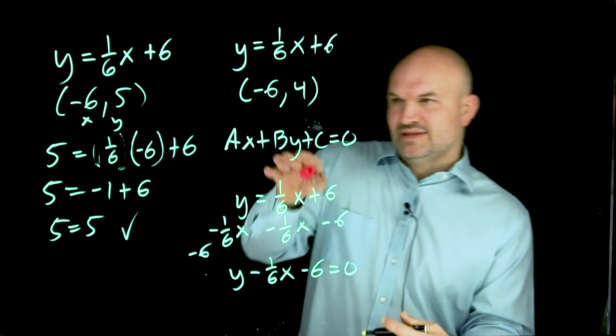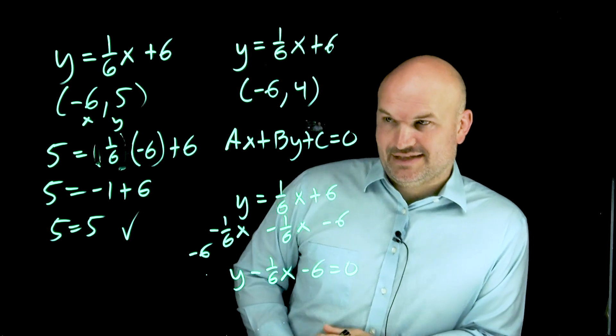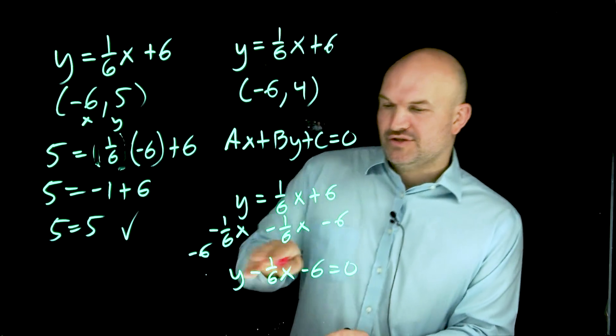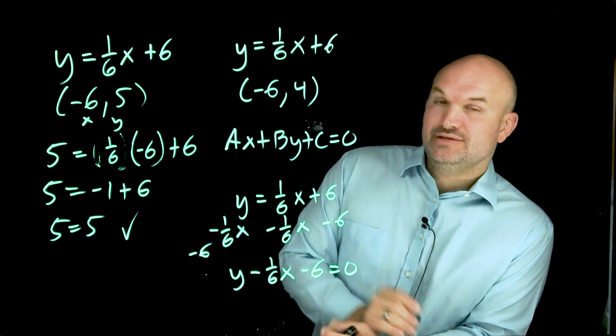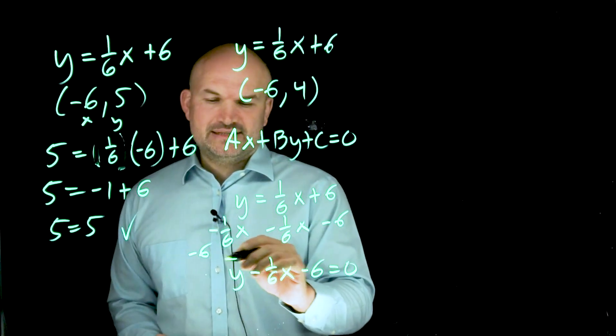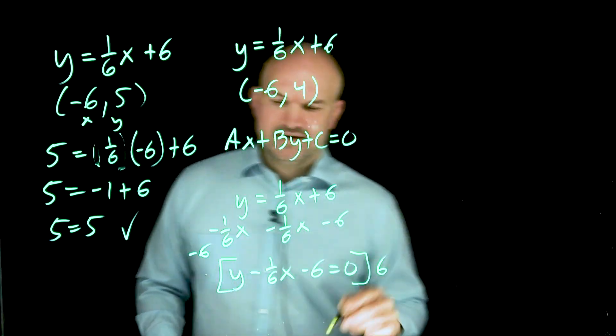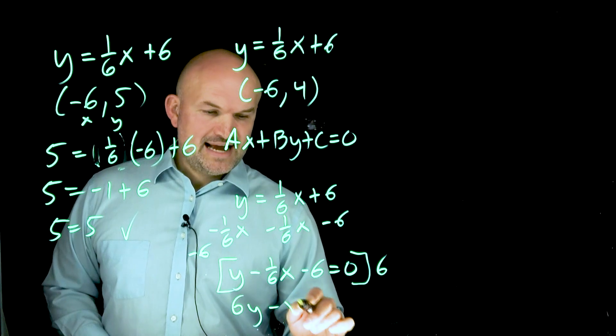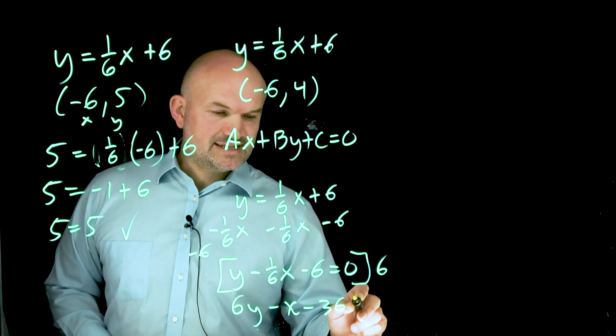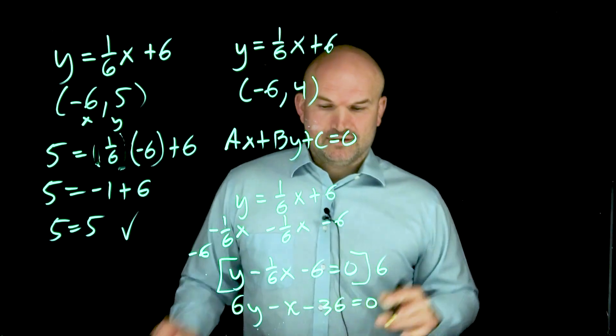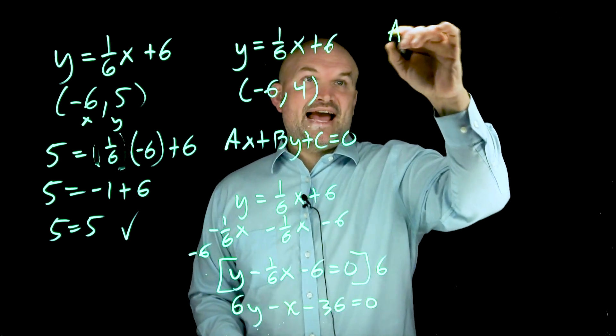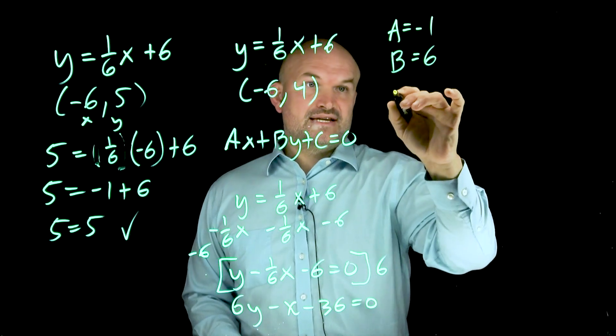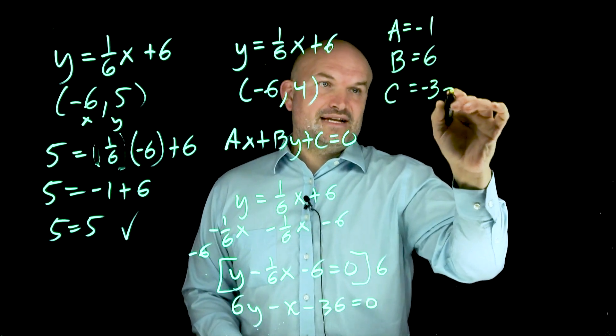Now it's very important that you notice these are capital letters. That means we want these to be integers, not fractions. So to get this one-sixth to not be a fraction anymore, I'm going to multiply everything times a positive six. Now I'll have a final equation of 6Y - X - 36 = 0. So if we label this, my A is negative one, my B is positive six, and my C is negative 36.